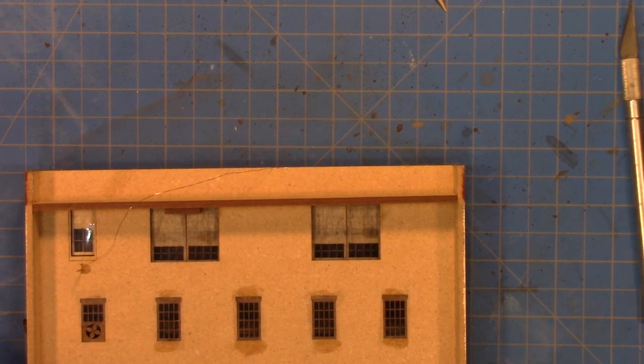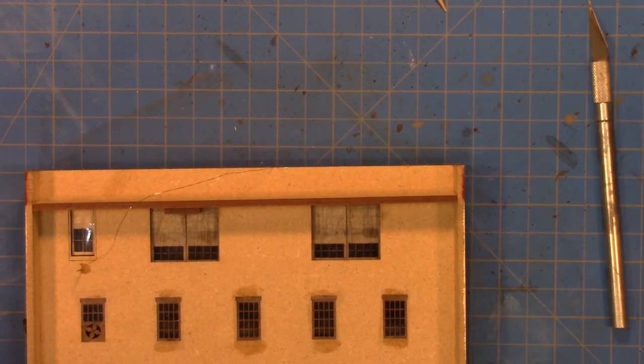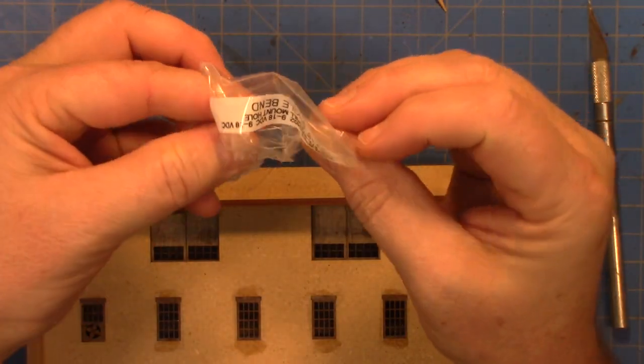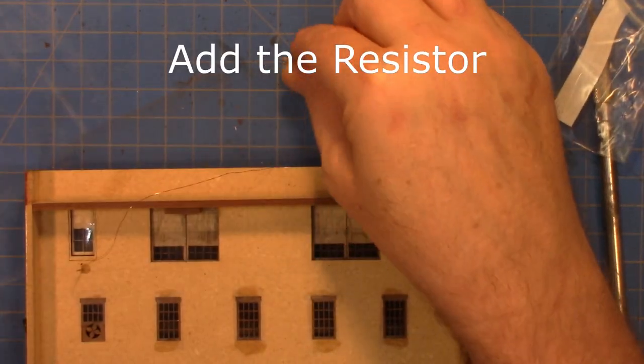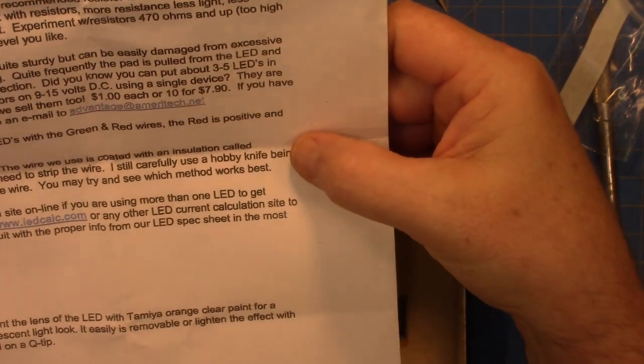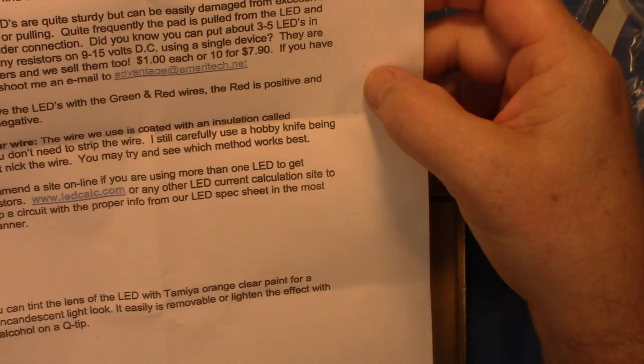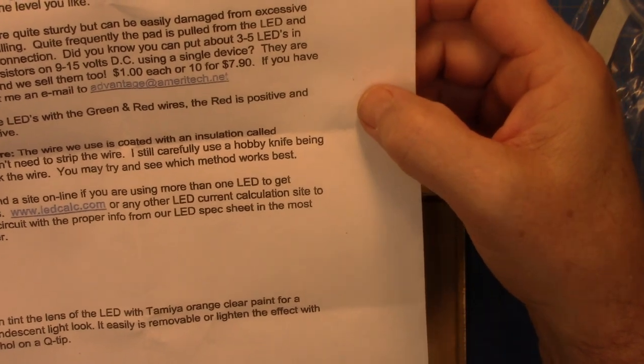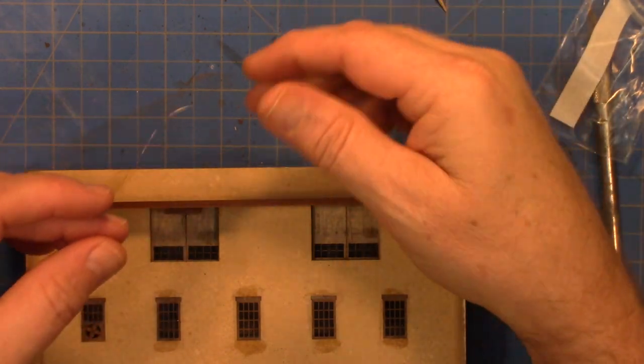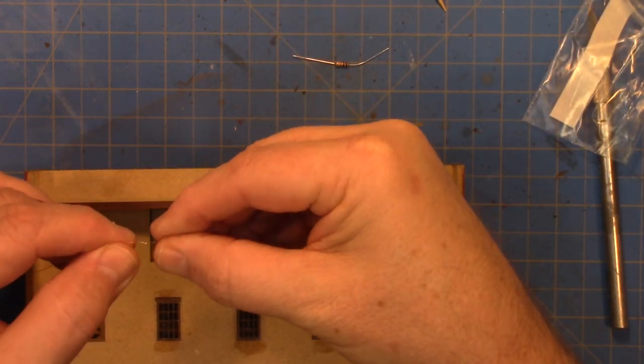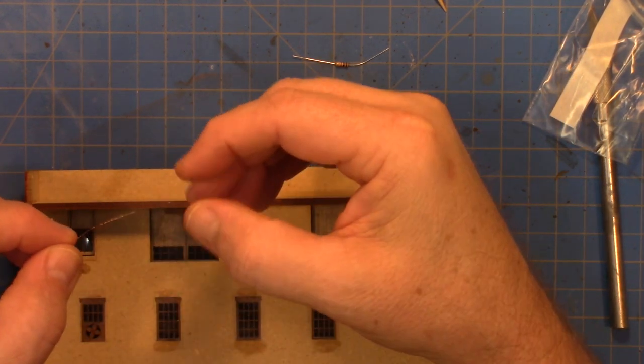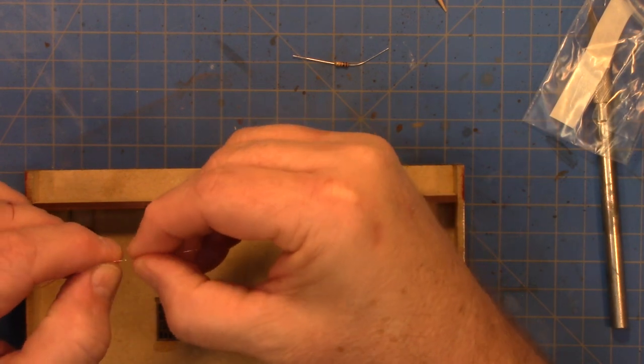So what I'm going to do, we need to add the LED. Now according to the directions that came with this, the wires are coated with an insulation called solder on. You don't need to strip the wire, so theoretically I will be able to just wrap one end. And they've got one end is shorter than the other, the short end is the negative or cathode side.